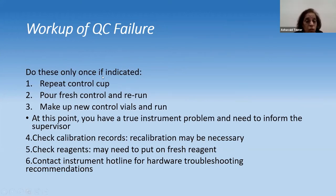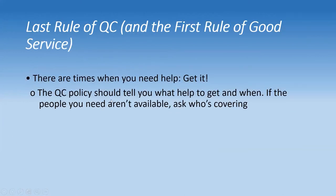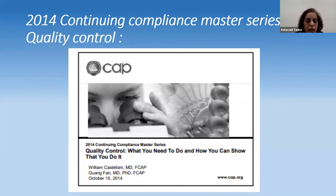For a major QC failure: first repeat the control, then prepare fresh control vials and rerun. If that hasn't rectified it, it is an instrument problem — check calibration records, recalibrate if necessary, put in fresh reagents. If all this fails, call the biomedical engineer for hardware troubleshooting. Your QC policy should tell you what help to get and when to get it, and there must be provisions for backup coverage.